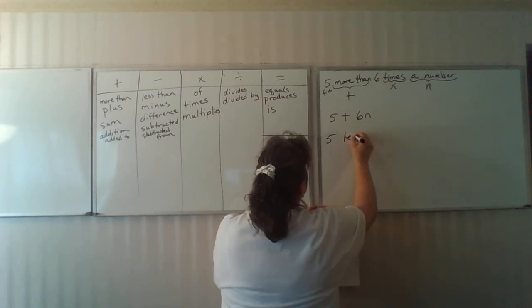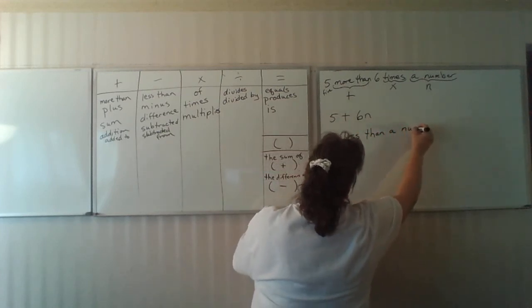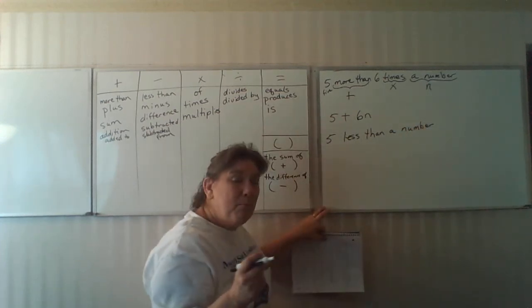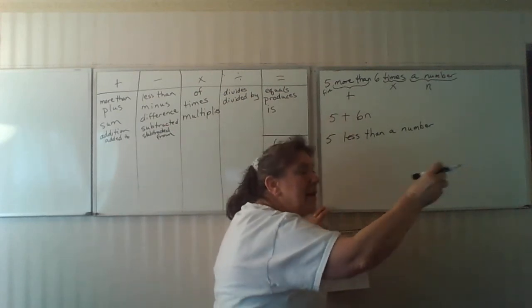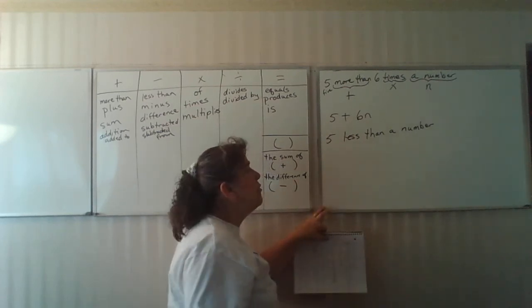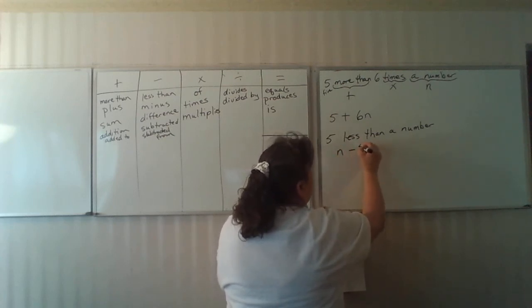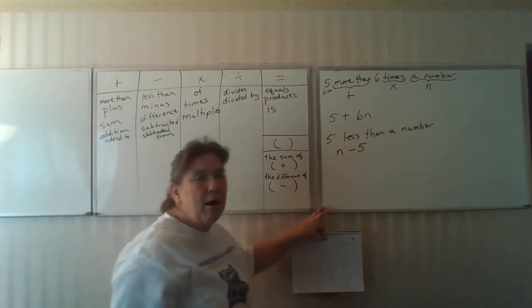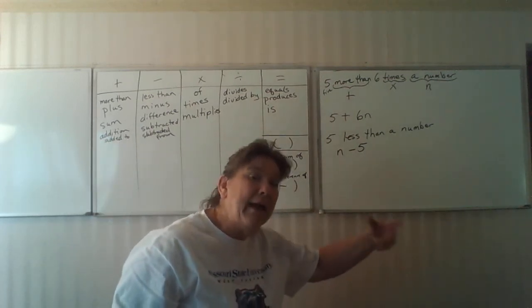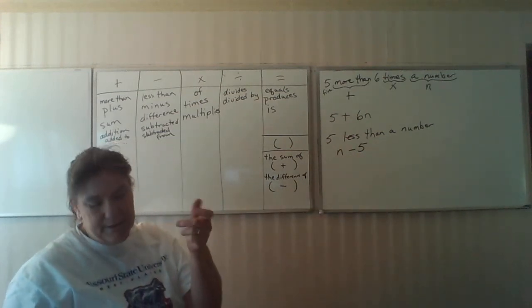Five less than a number. What does this say? Am I taking five from my number, or am I taking the number from five? This is important. Five less than a number means my number, and five is being subtracted from that number. It's n minus five. It's a little flip to it that confuses people.